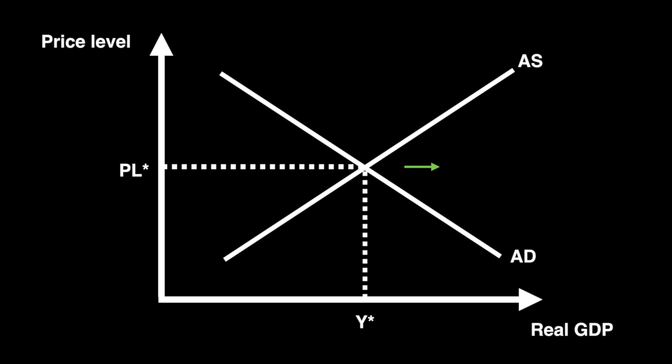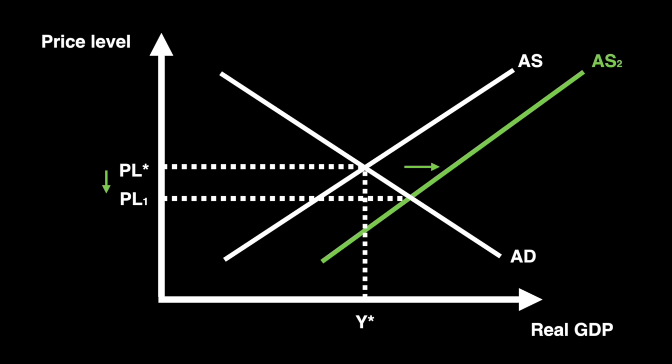Here we have a shift of the aggregate supply curve due to a decrease in production costs. This shifts short-run aggregate supply to the right and lowers the price level and increases real GDP. The price level falls from PL star to PL1 and real GDP rises to Y1 from Y star. The diagram is laid out as you should be drawing it whenever you reference it in your writing. As good practice in multiple choice questions, draw a mini version of this diagram next to questions asking you to consider the impact of changes of aggregate demand and aggregate supply in the short run.